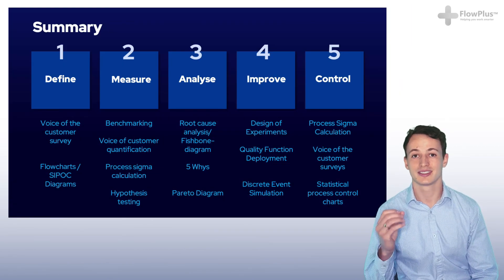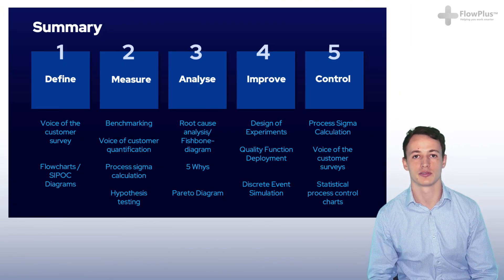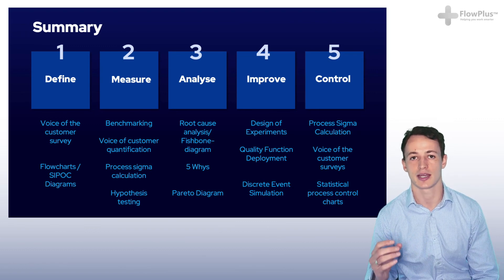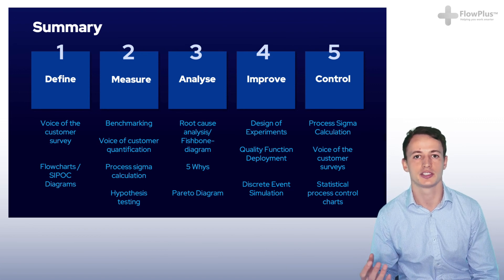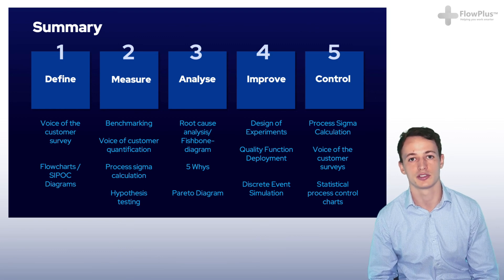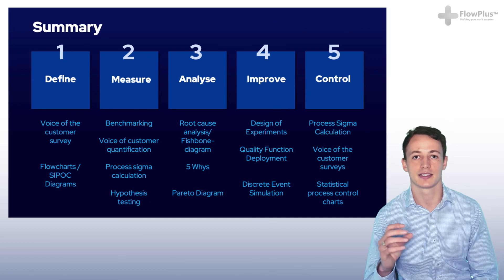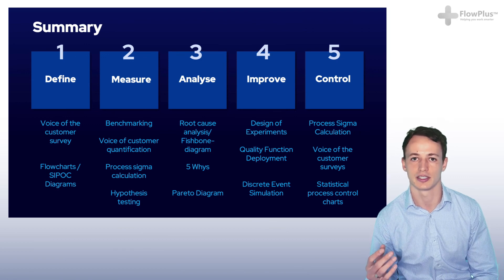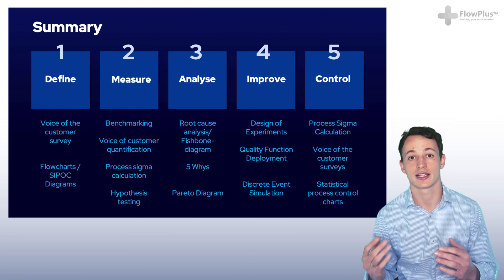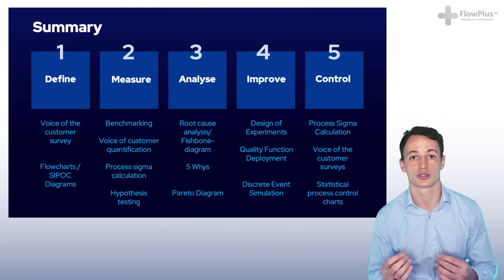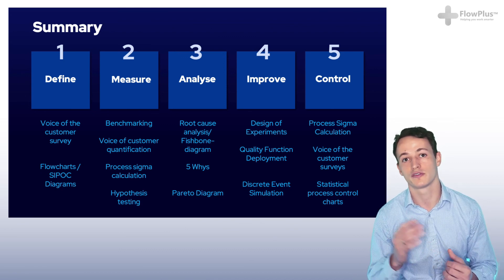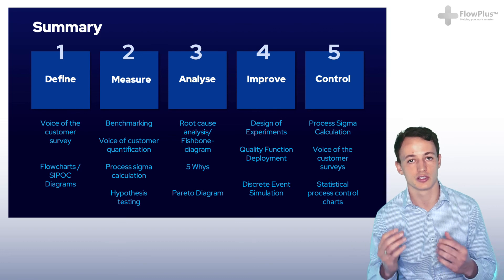The structured Six Sigma DMAIC approach follows five steps, and you can use tools and techniques within each step to help clarify points, ensure clear communication, and help uncover solutions that otherwise could be missed. Please select the appropriate tool at each stage as you see necessary. Remember, the tools are there to support what you are trying to achieve — you should first look at the problem, and then select the appropriate tool for that.